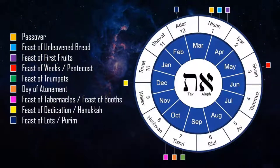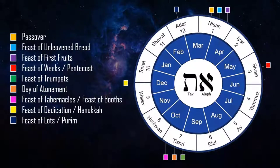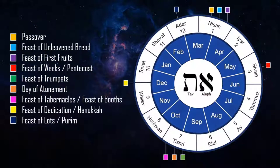If you take a look, you can see here's the Hebrew calendar. The year starts in the month of Nisan — it used to be called the month of Abib. As the Israelites were held in captivity by different nations, some of their months had changed. Nisan is an example; Tammuz is another example, which you can see there around June/July.